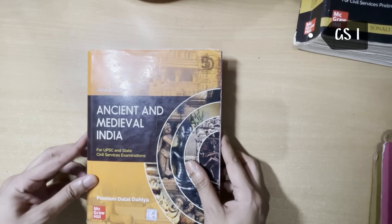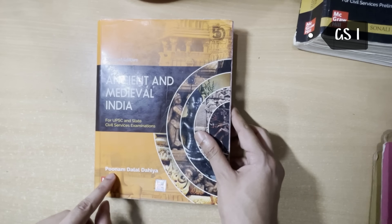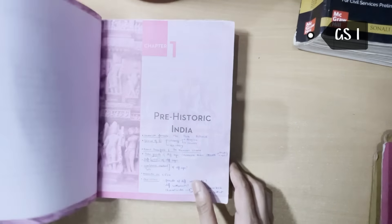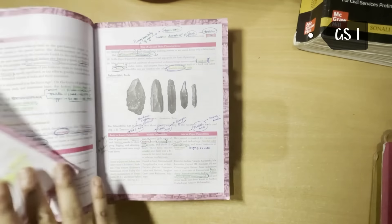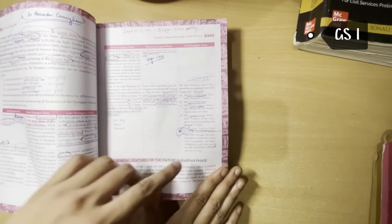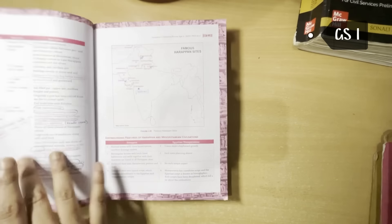For ancient and medieval, I was using this book by McGraw Hill's publication, written by Poonam Dalal Dahiya Ma'am. And I had also gone for several rounds of revisions and value additions for this book itself, as you can see.